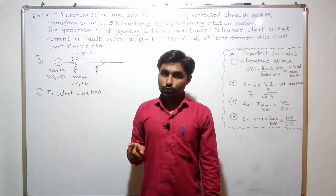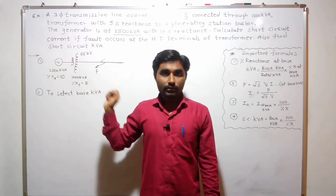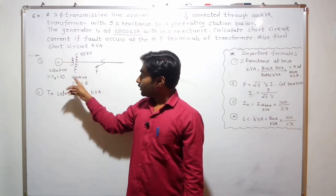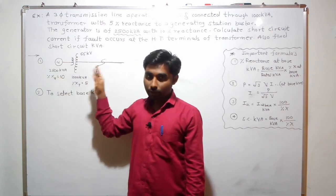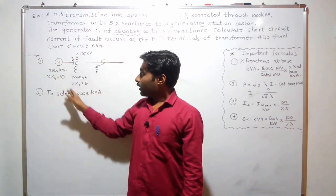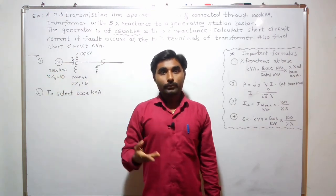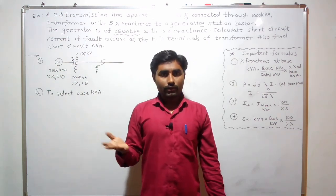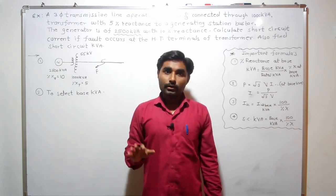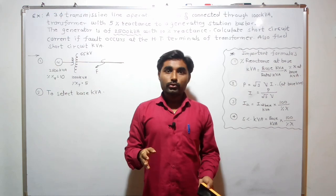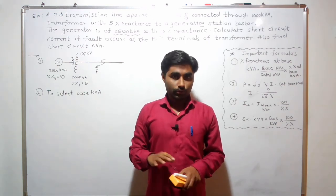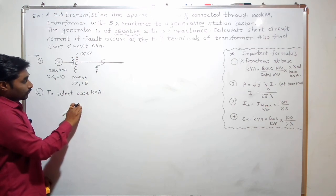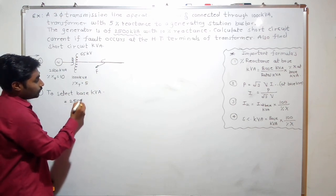The third method is you can choose any arbitrary value such as 4000 kVA or 4500 kVA, but you have to use it throughout the example — you cannot change the base kVA once chosen. In this example, we will select the base kVA as the largest value in the circuit, which is 2500 kVA, the same as the generator rating.